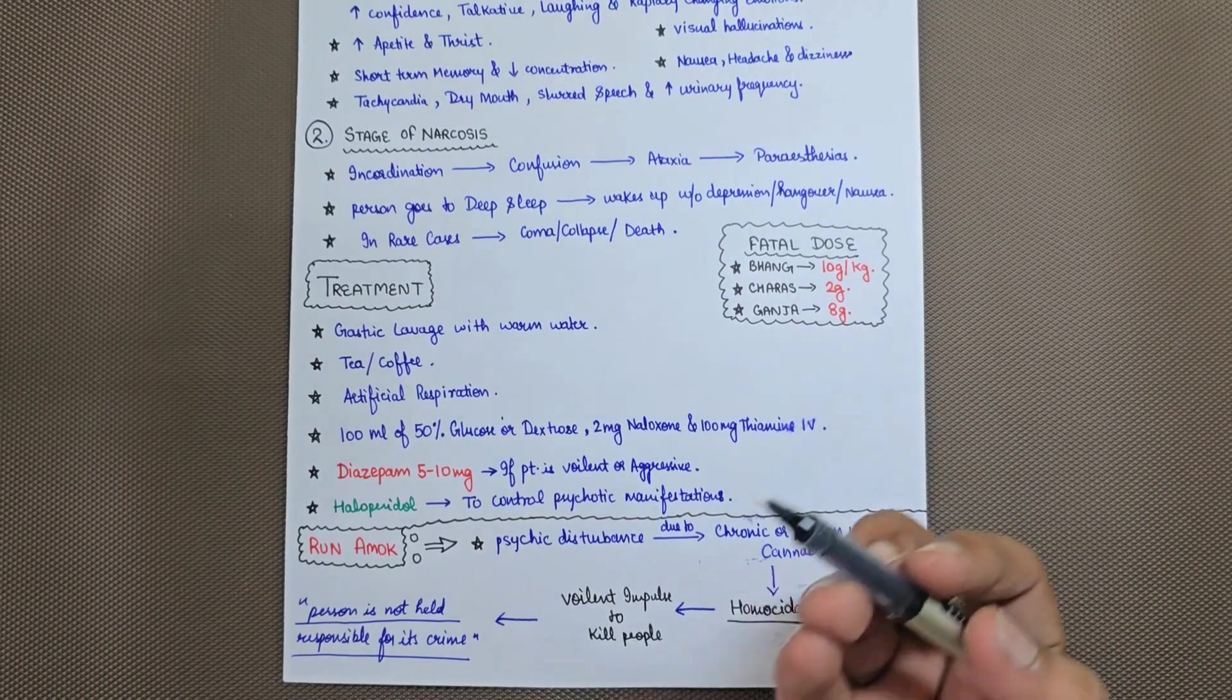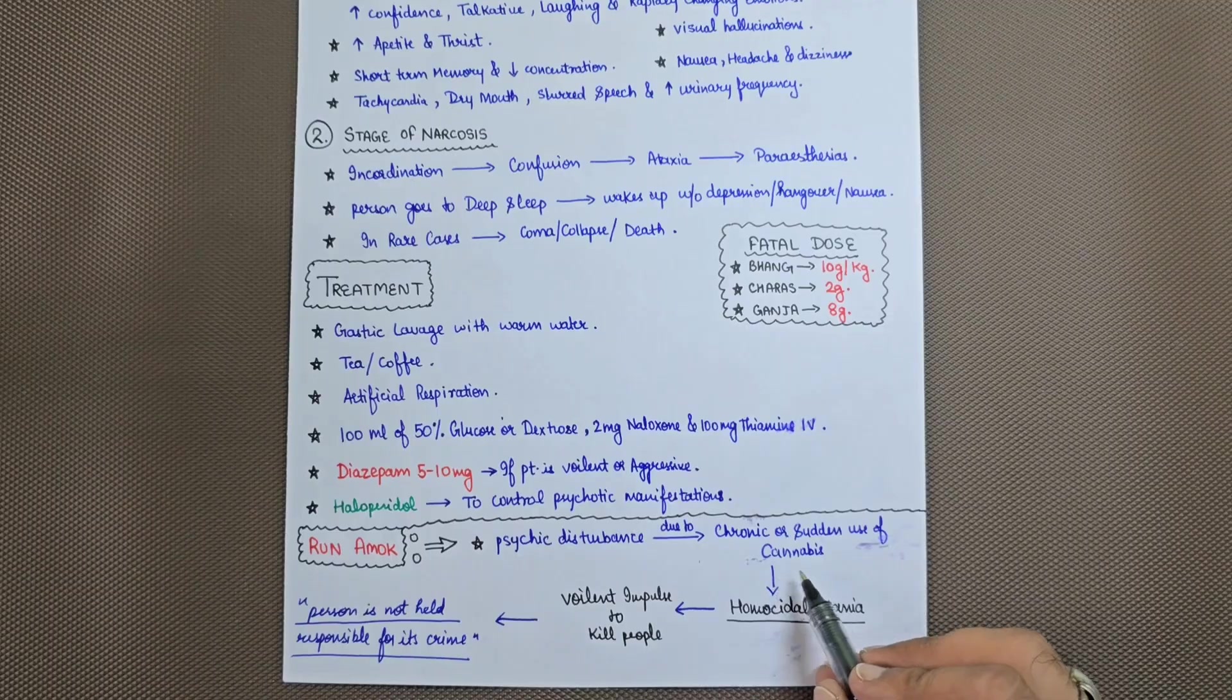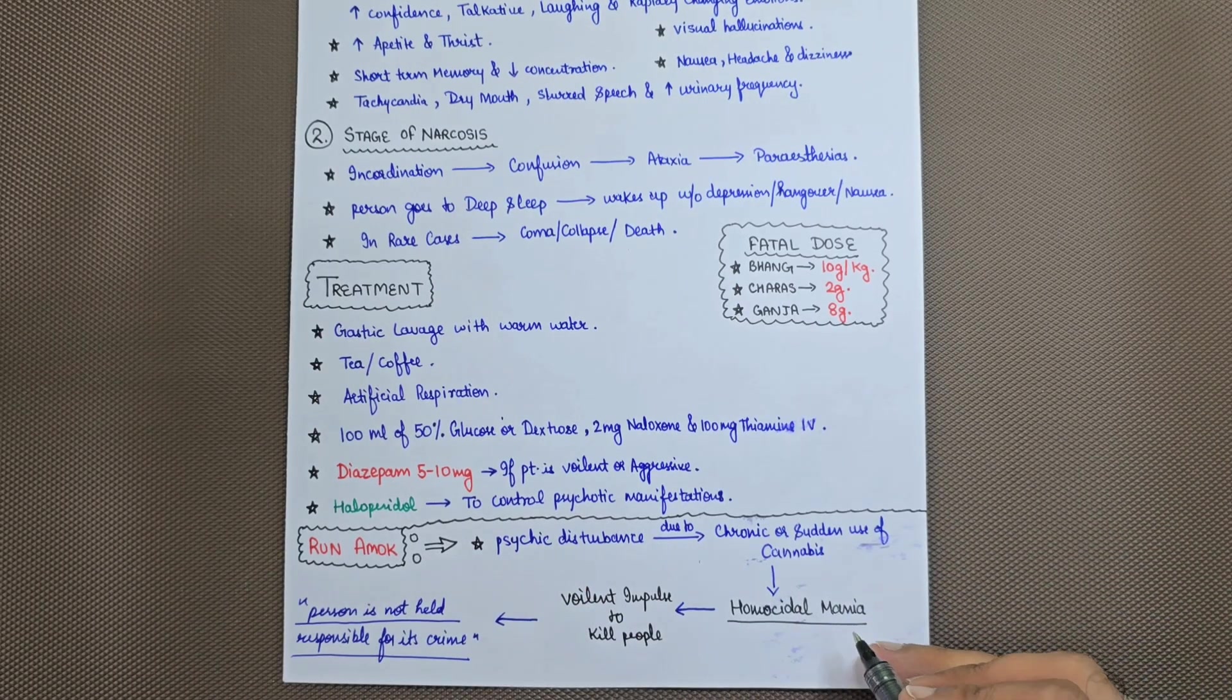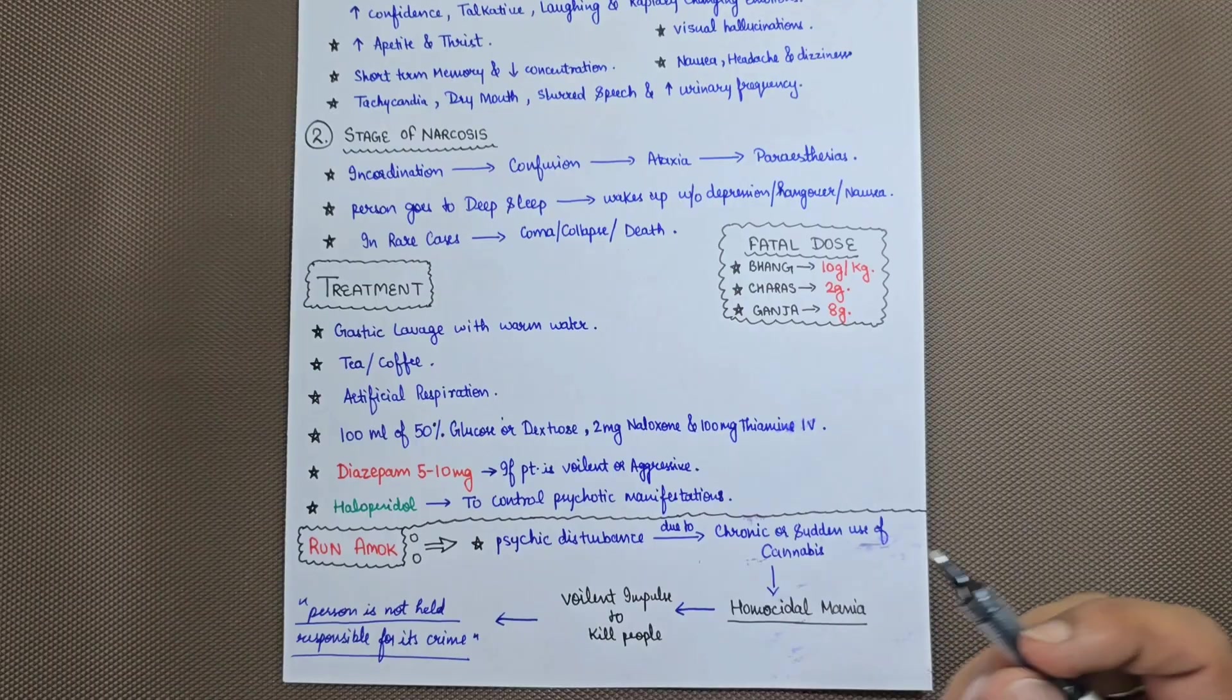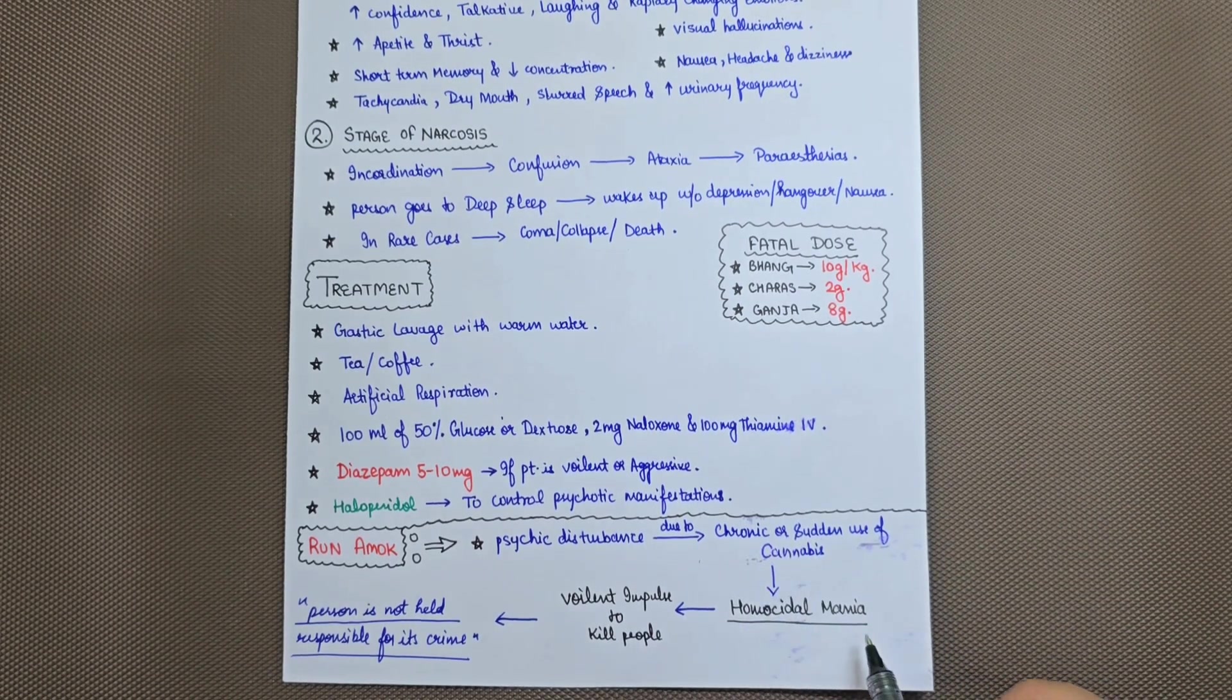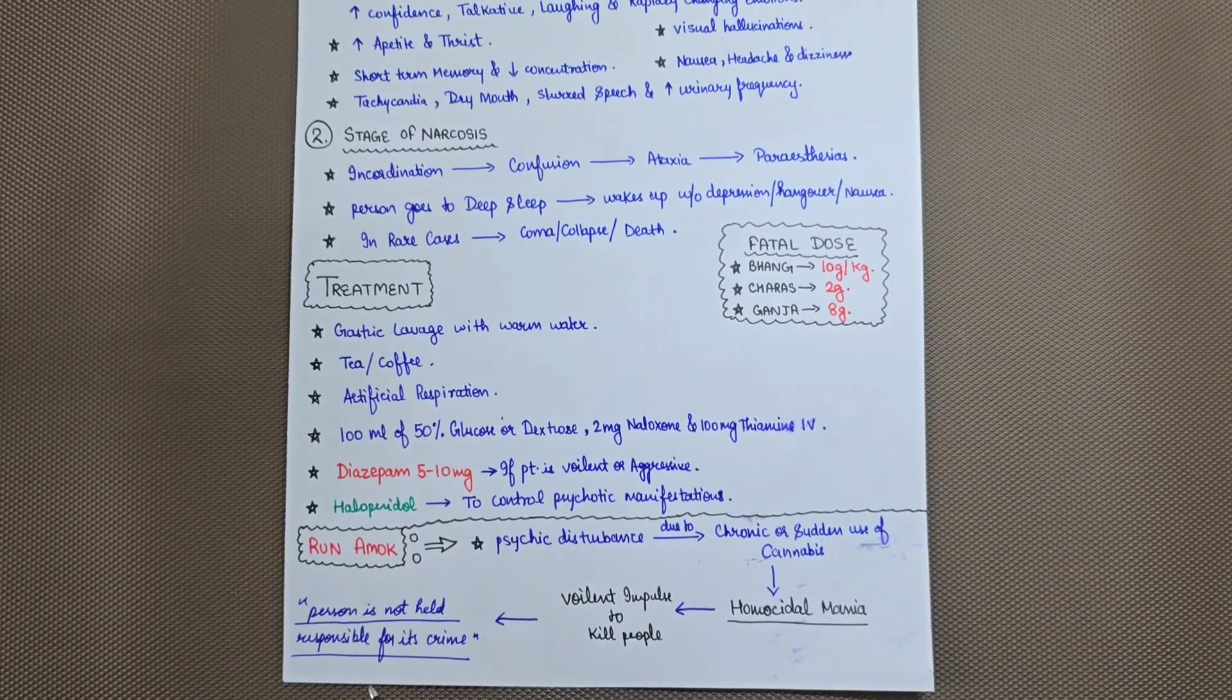There is another aspect usually linked with cannabis consumption: running amok. This is a psychic disturbance due to chronic or acute use of cannabis. When a person consumes a very high amount suddenly, it can lead to this situation. There is homicidal mania linked with violent impulse to kill people. When a person consumes cannabis for a longer period or in high amounts, they may develop homicidal mania. Importantly, when a person goes into this running amok state, they are not held responsible for their crime.